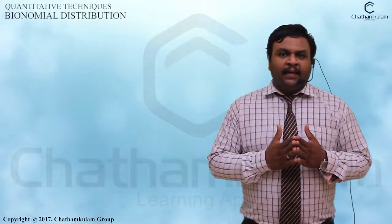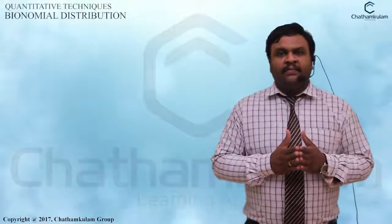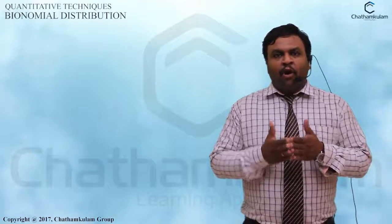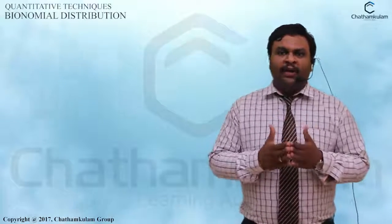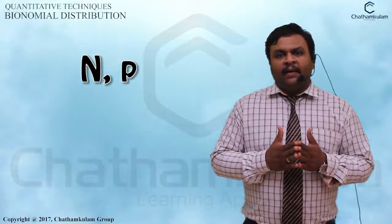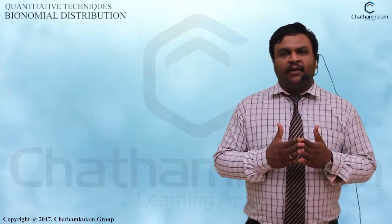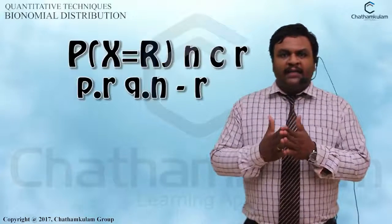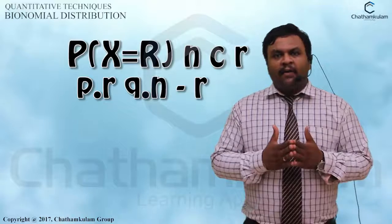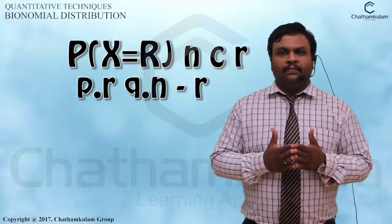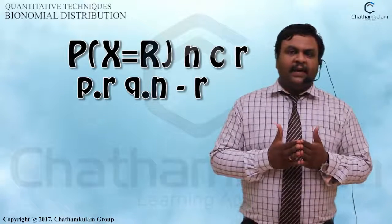It can be defined as: the random variable r which follows the binomial distribution with parameters n and p. Then the probability function is P(x = r) = nCr × p raised to r × q raised to n minus r. This is the probability function of binomial distribution.